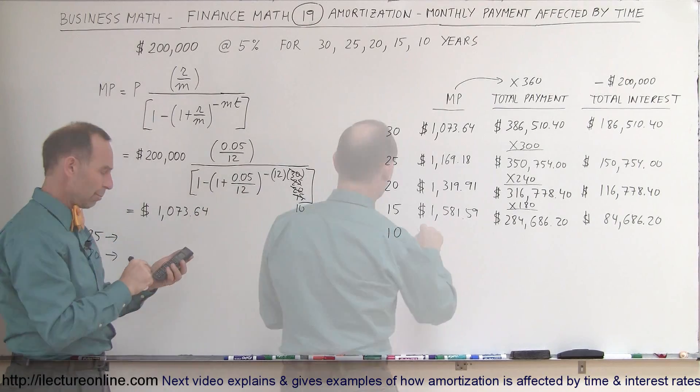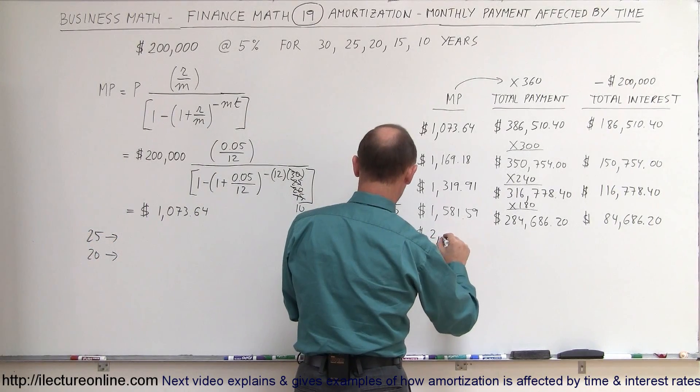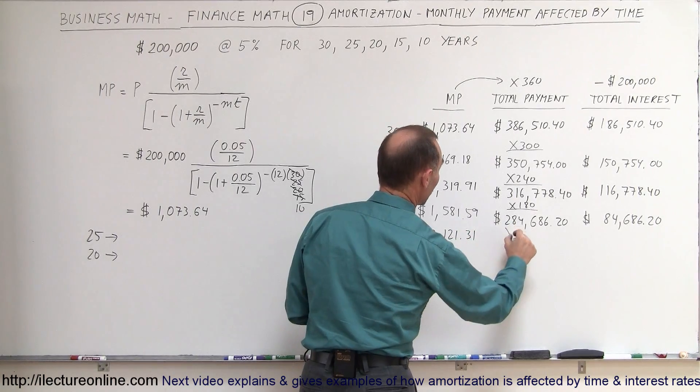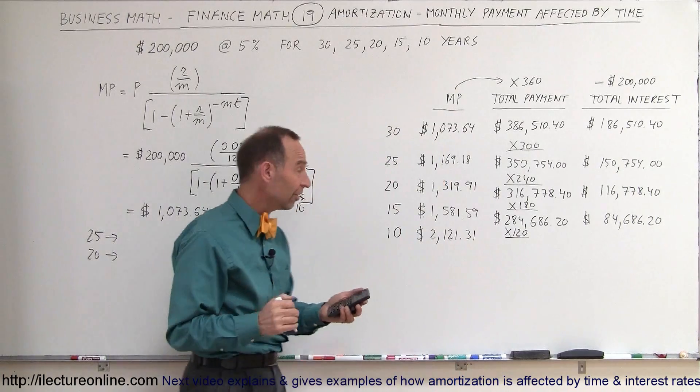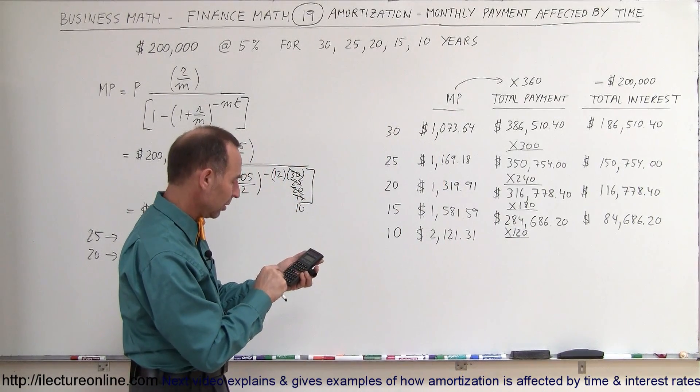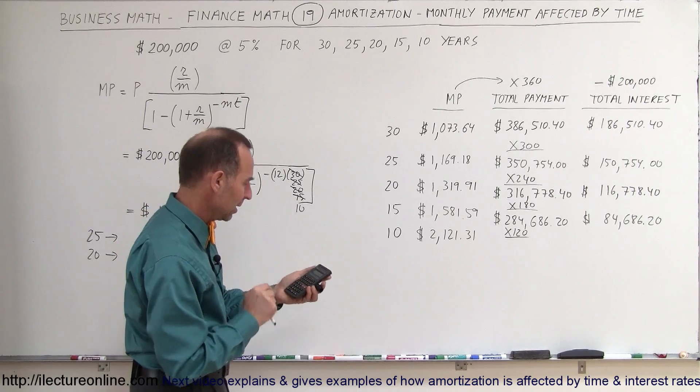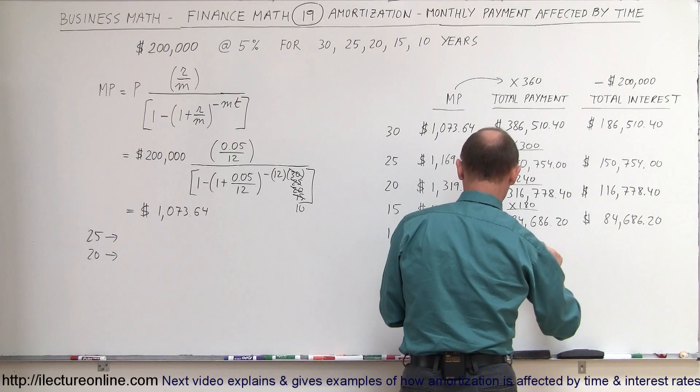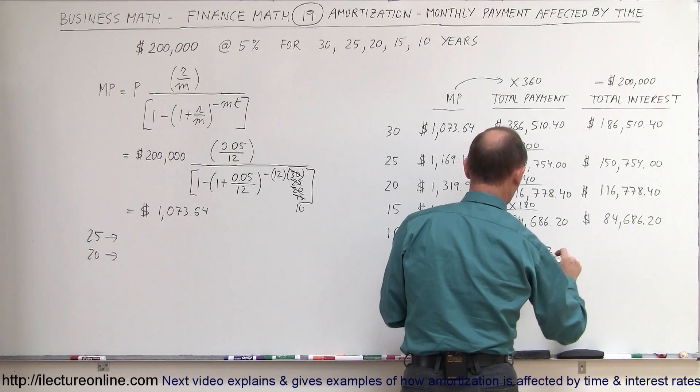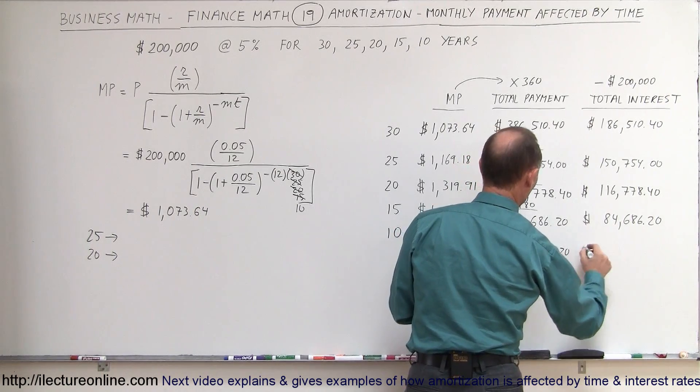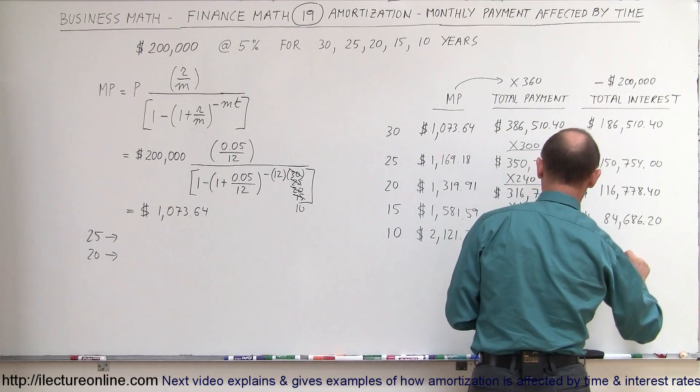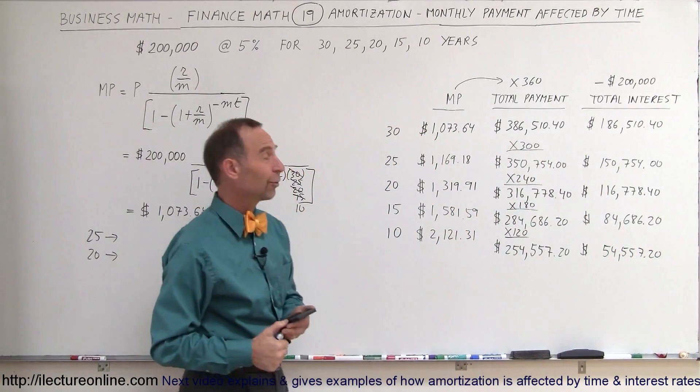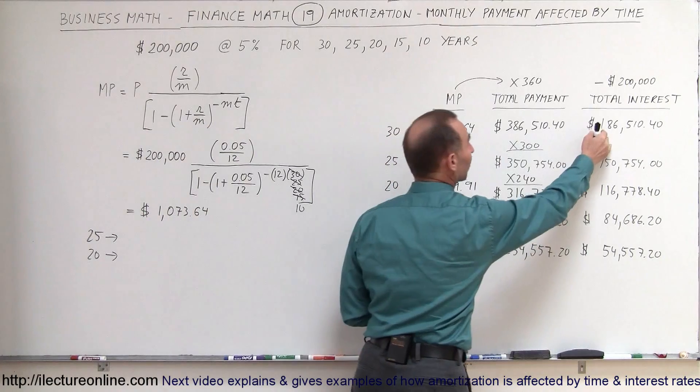So starting from here, so now your monthly payments are $2,121.31. We multiply this now times 120 to get the total payments in this case. $2,121.31 times 120. You'll be paying a total of $254,557.20, which means the interest will add up to $54,557.20. So you'll only be paying $54,000 of interest versus $186,000.